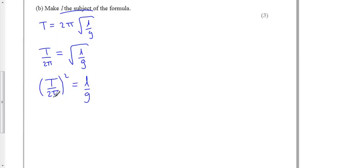So we can square it, which means we've got to square the top, square the bottom. So we get T squared over 2 squared is 4, pi times pi is pi squared. That's L over g. And then to get L on its own, we just need to multiply everything on this side by g.